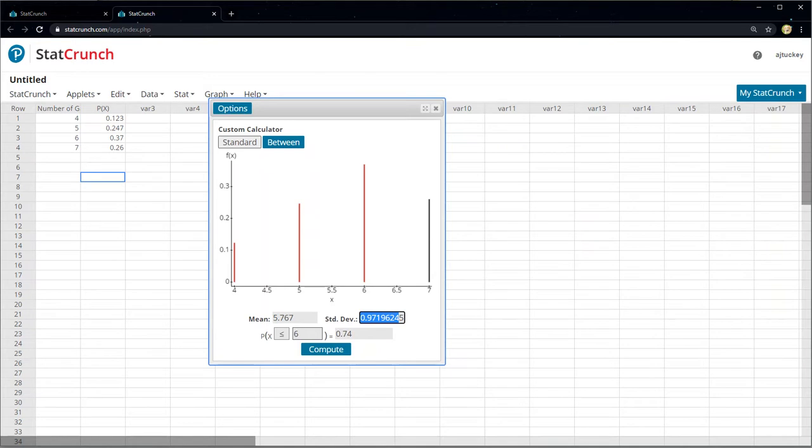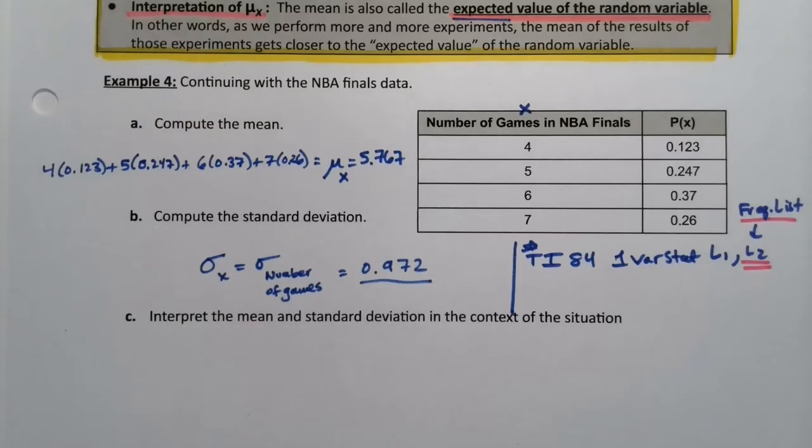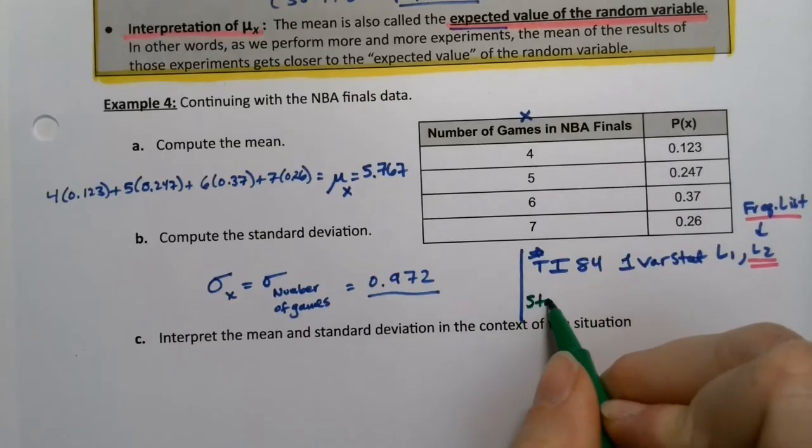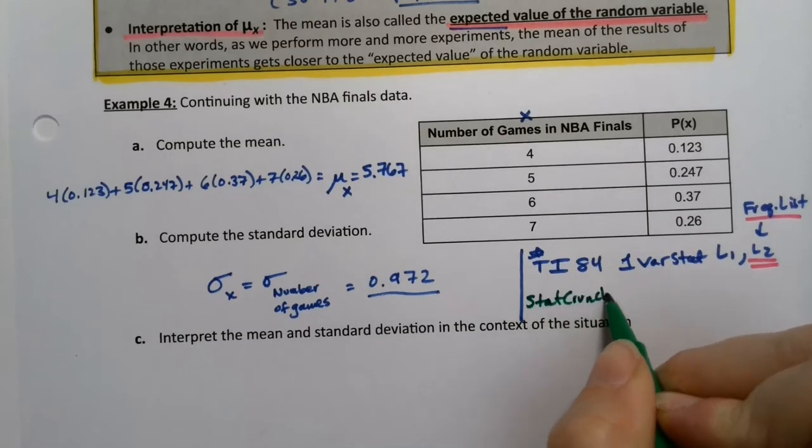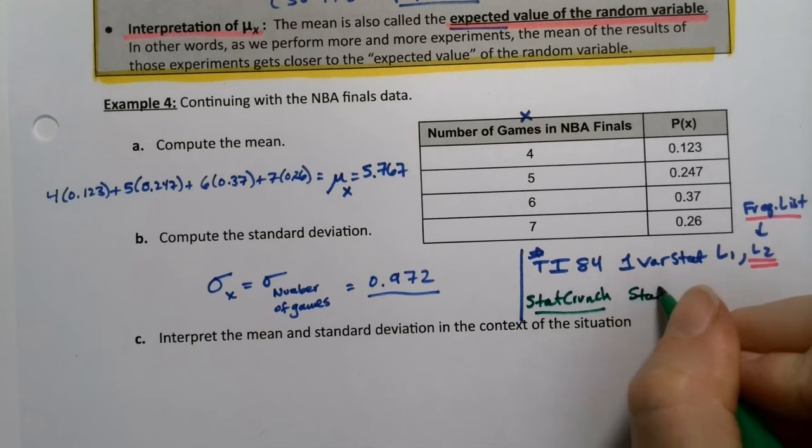And there you can see it tells you the mean right there, there's μ, and there's σ. Same thing that the calculator gave us. Just ignore the rest of this, we don't care about the rest of it. Don't worry about it. But you just want the mean and the standard deviation out of there. So let's write that down. On StatCrunch, you go to STAT, Calculators, and Custom.